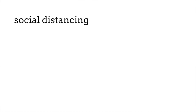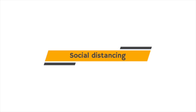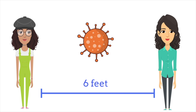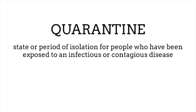By now everyone has heard the terms social distancing, stay at home, or quarantine. Social distancing, recommended by the CDC and other organizations, means that you should stay six feet away from all other people. The reason for this is to minimize exposure to the disease. A stay-at-home order has been also in place in many states and cities in the U.S. Quarantine is the term for the state or period of isolation for people who have been exposed to an infectious or contagious disease.